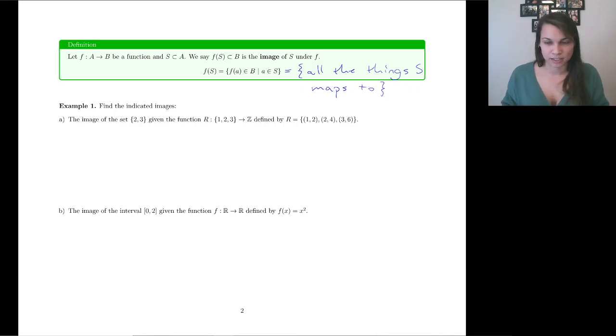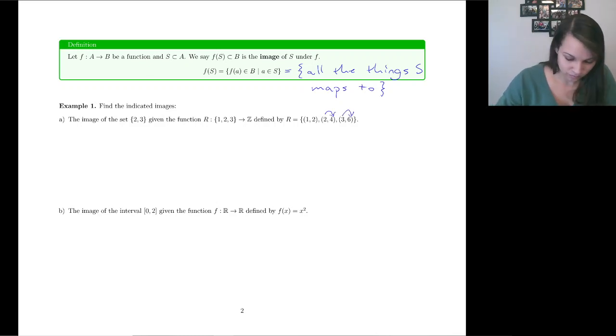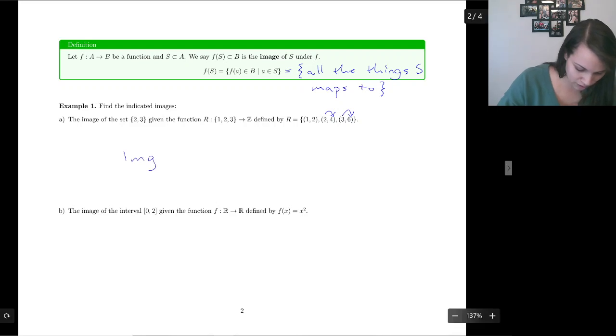We've got a couple of functions written in different ways. So let's say we want to talk about the image of the set {2, 3}, given this function r, that looks like this. So then we go ahead and we look at this. We say 2 is mapping to 4. We say 3 is mapping to 6. So the image of the set {2, 3} is the set {4, 6}.